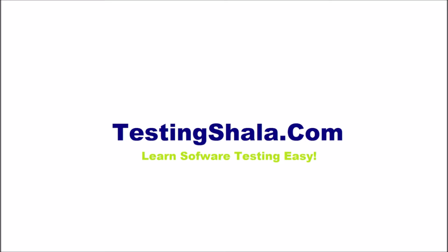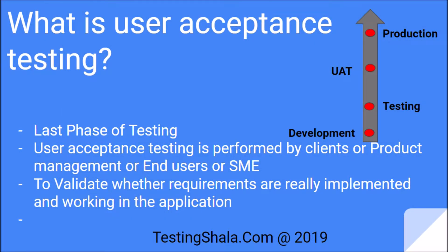Let's move on to understand what is user acceptance testing. If we look at this chart, we will see a development phase, then a testing phase, and after the testing phase there will be UAT — user acceptance testing — and after that there will be production, where the application which is tested will be put into production.